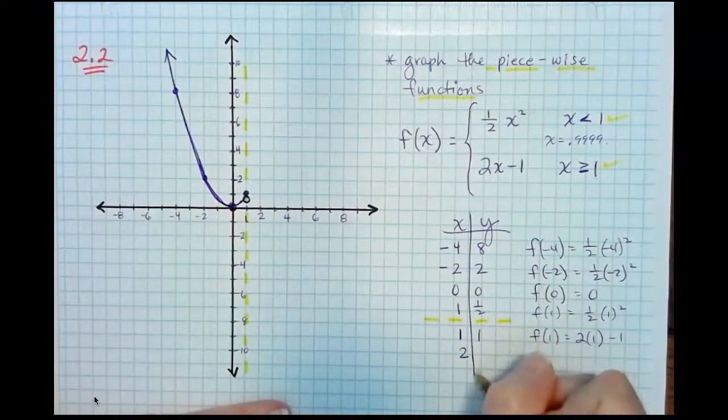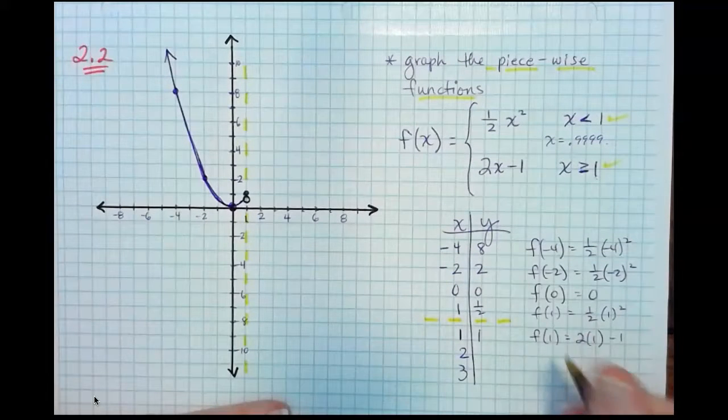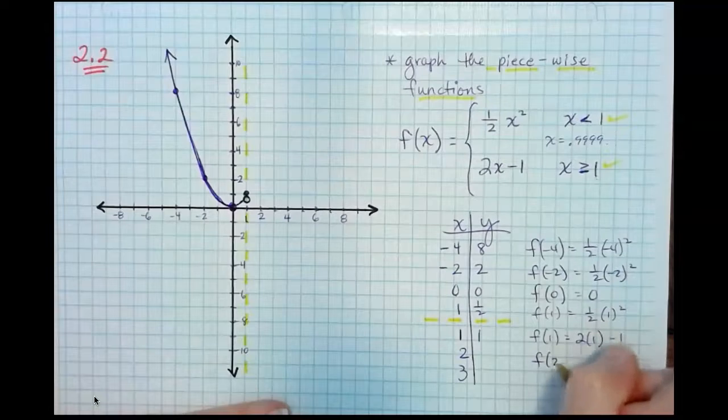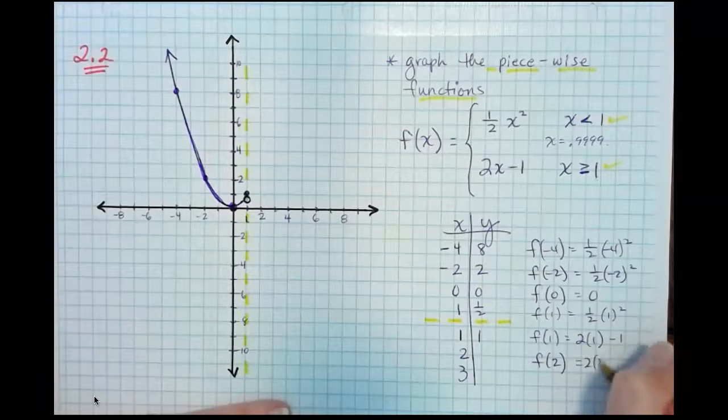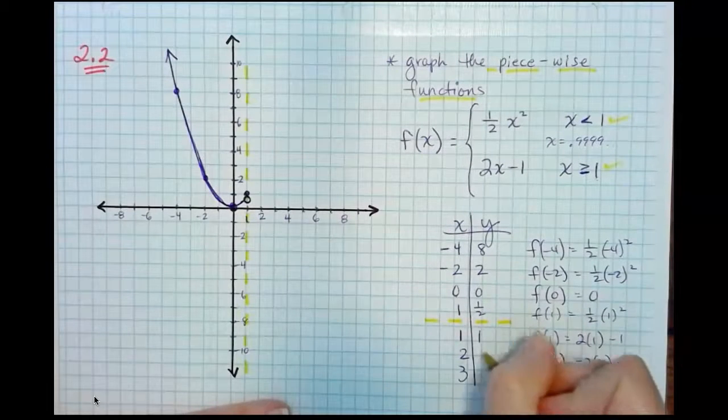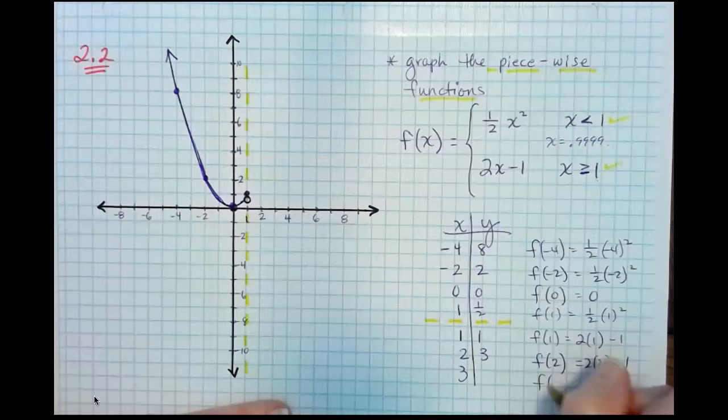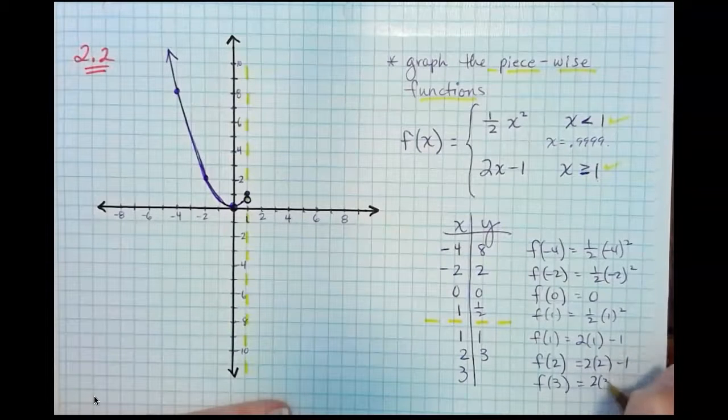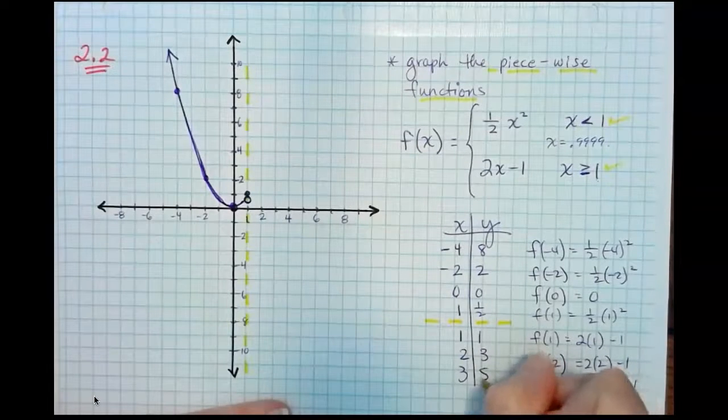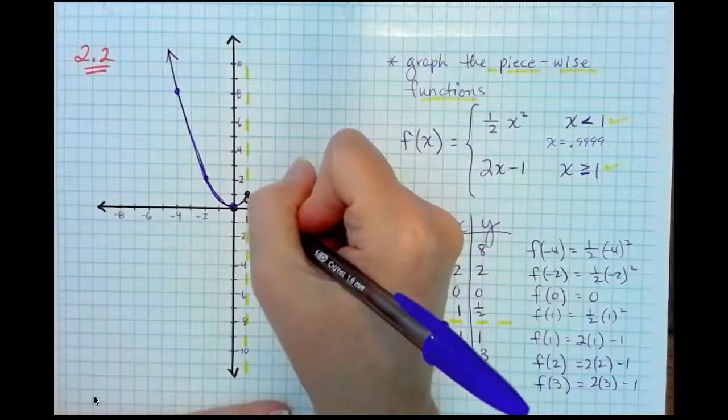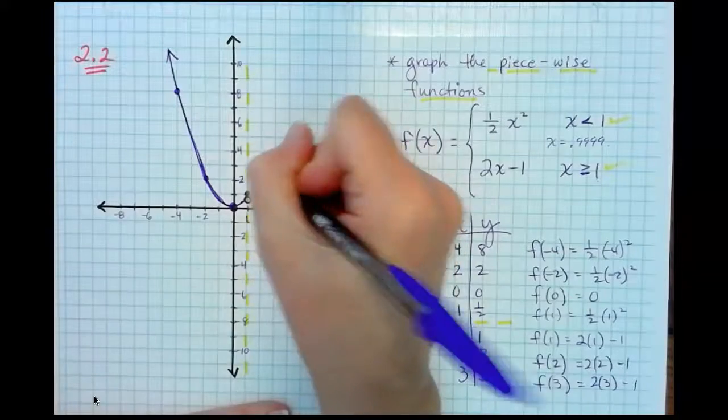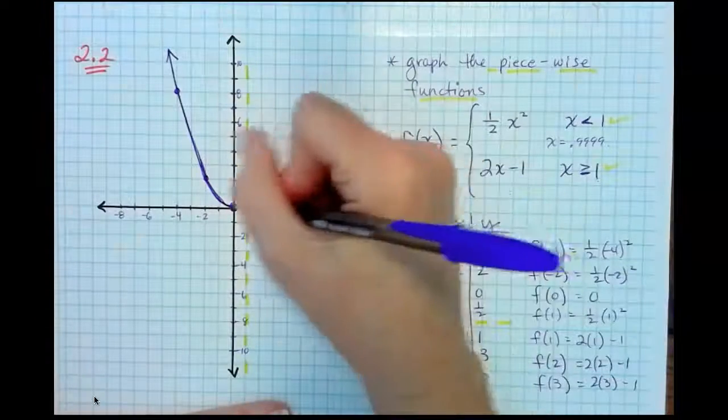So that is a point that is directly on top of that open circle. Let's keep going here. 2 and 3. So we could find f of 2. That is 2 times 2 minus 1. That's 4 minus 1, that's 3. And then f of 3. 2 times 3 minus 1. That is 5. Over 2, 1, 2, 3. Over 3, up 5.